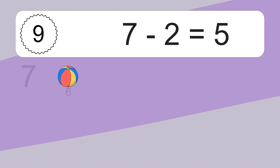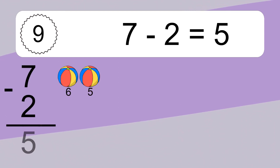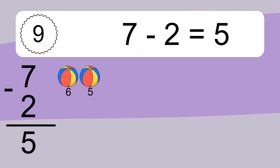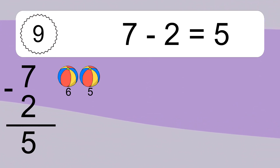7 minus 2 equals 5. Let's count it: 6, 5.